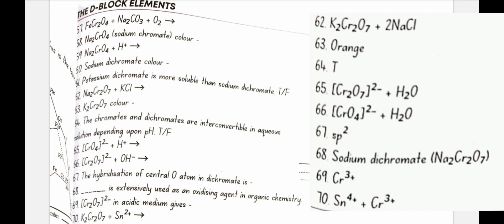The chromates and dichromates are interconvertible in aqueous solution depending upon pH. Yes, true. CrO4 2 minus plus H plus gives Cr2O7 2 minus plus H2O. The hybridization of central oxygen atom in dichromate is Sp3.